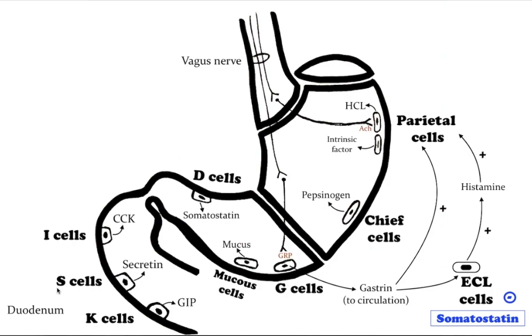Duodenal secretory cells include I cells. I cells secrete cholecystokinin or CCK and are located in the duodenum and jejunum. They modulate bile secretion, exocrine pancreas secretion, and satiety.